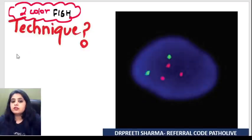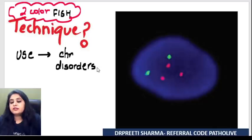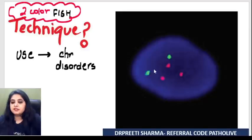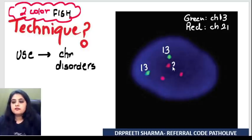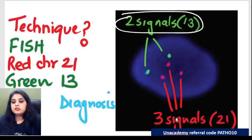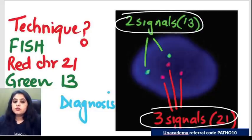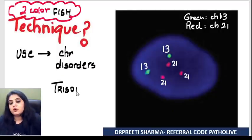This two-color FISH is used for detecting chromosomal disorders. The examiner will tell you the color coding — for example, green has been given to chromosome 13 and red to chromosome 21. All you do is mix and match: two green signals means chromosome 13 is in pair and fine. Three red signals means three copies of chromosome 21.